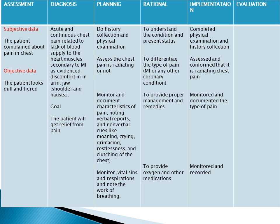I have added one care plan — that is for acute and continuous chest pain related to lack of blood supply to the heart muscles, secondary to myocardial infarction, as evidenced by discomfort in arm, jaw, and shoulder, as well as nausea. The subjective data: the patient complains about pain in the chest. Objective data: the patient looks dull and tired. Goal: the patient will get relief from pain.